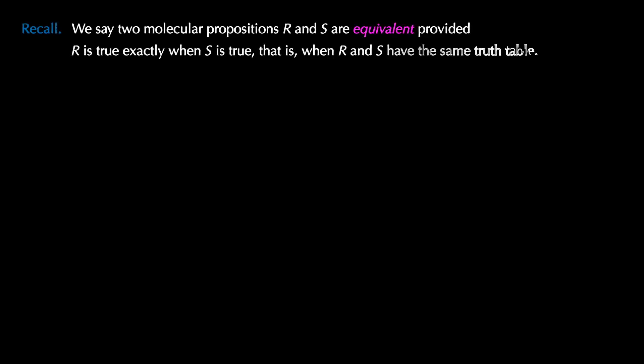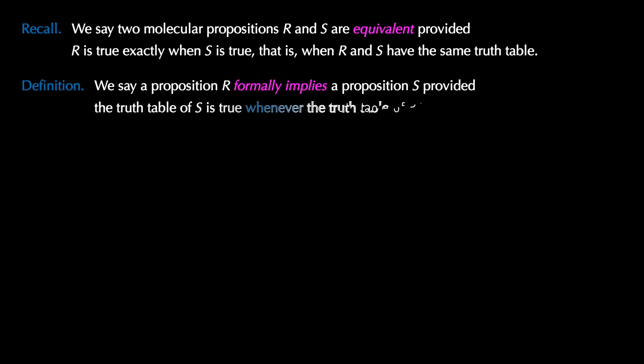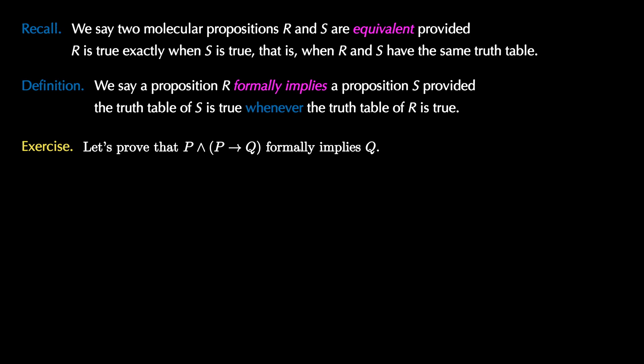Recall that two molecular propositions R and S are equivalent provided they have the exact same truth table. We can now do something weaker. We say that a proposition R formally implies a proposition S provided the truth table of S is true whenever the truth table of R is true. Let's use this definition to formally prove that P and P implies Q formally implies the proposition Q.